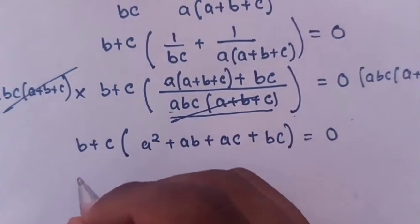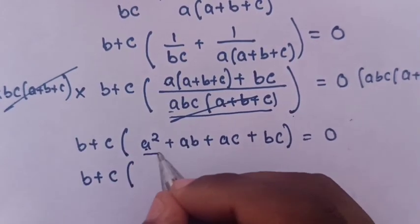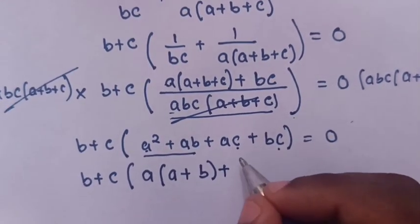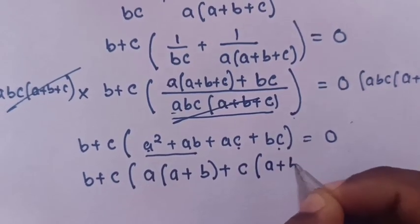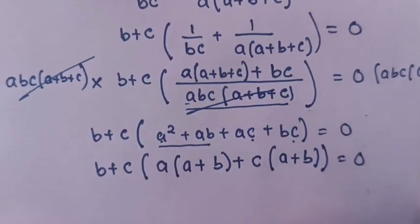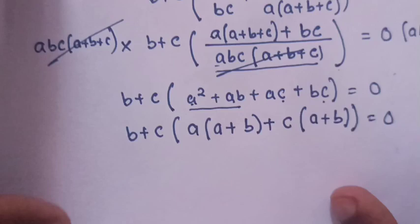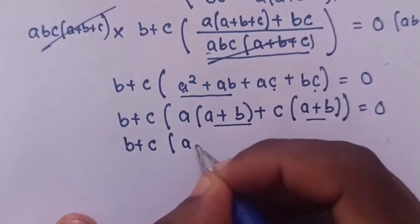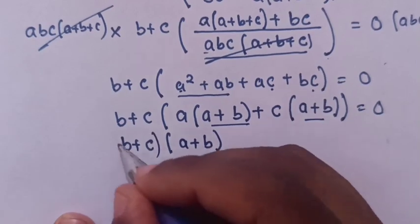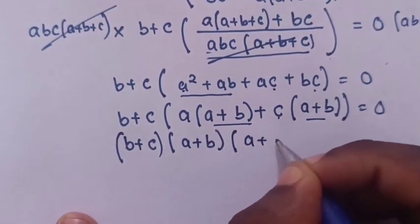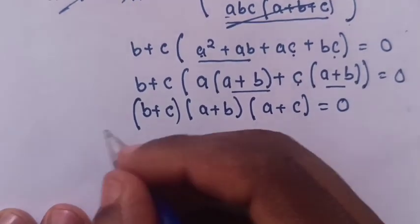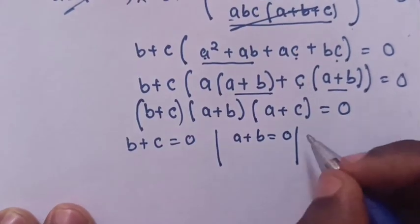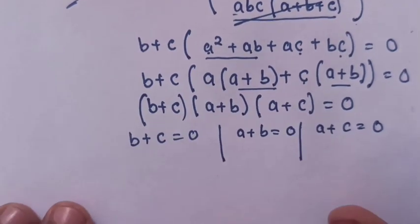We can see that (A plus B) is a common factor, so the equation becomes (B plus C)(A plus B)(A plus C) equals 0. This gives us three cases: B plus C equals 0, A plus B equals 0, or A plus C equals 0.